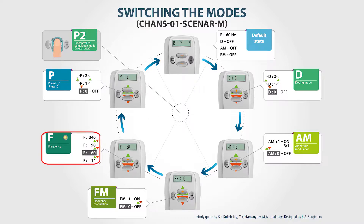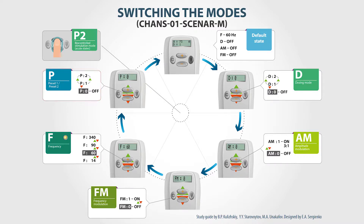The last menu parameter is the presets. You can switch on the presets P1 or P2 by pressing the plus button, or switch them off by pressing the minus button, just like you do with the dosing modes.